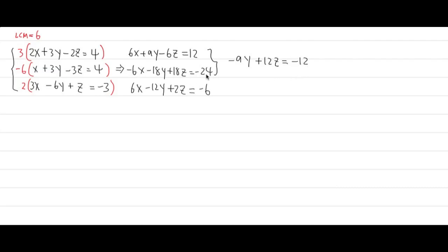Now we use the second equation again combined with the third. This is why I wanted alternate signs — the negative 6x and positive 6x cancel right away. Negative 18y minus 12y is negative 30y; 18z plus 2z is plus 20z; and that equals negative 24 minus 6, giving us negative 30.